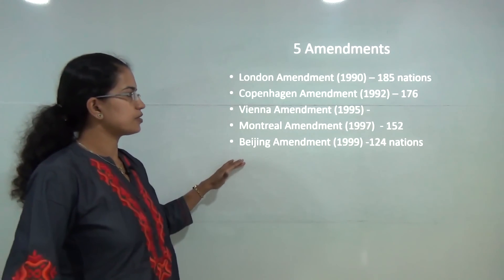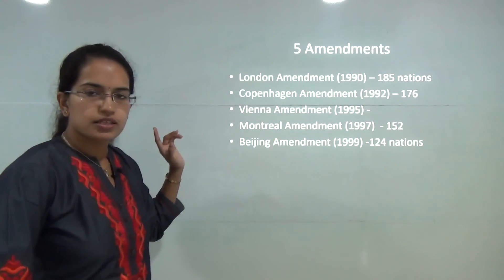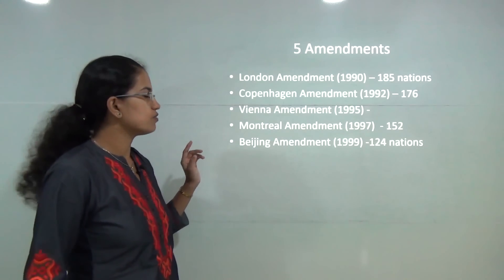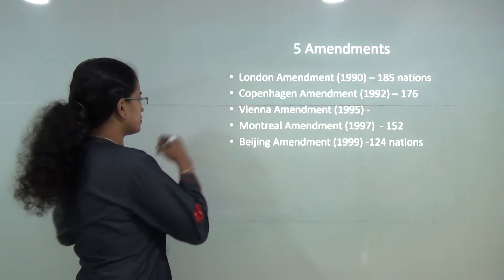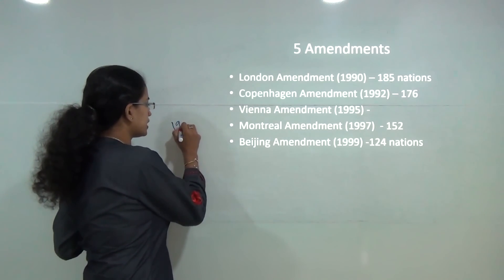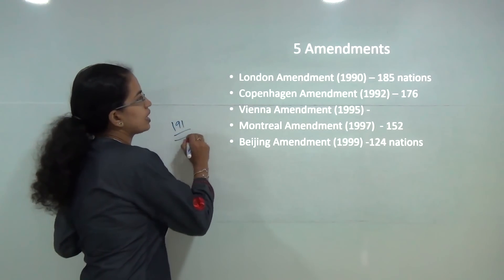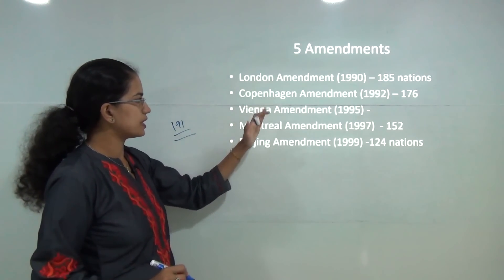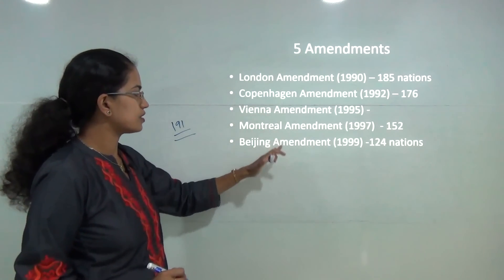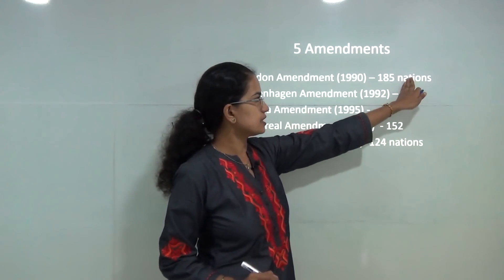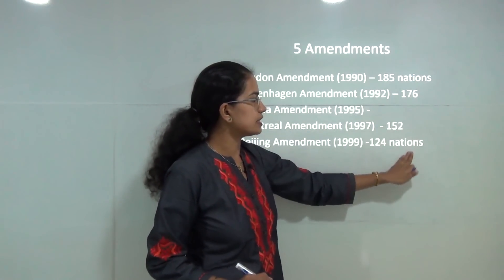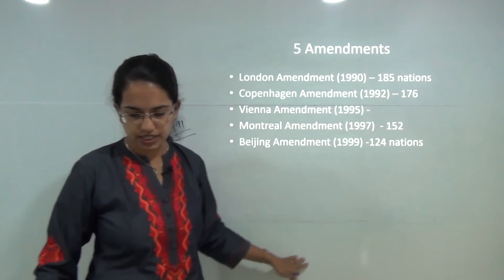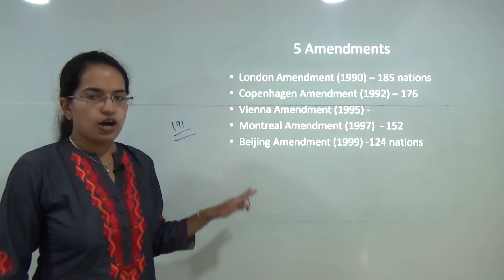The Montreal Protocol itself and the Vienna Convention were ratified by 191 nations. The London, Copenhagen, Vienna, Montreal, and Beijing amendments were also ratified by their respective number of nations.